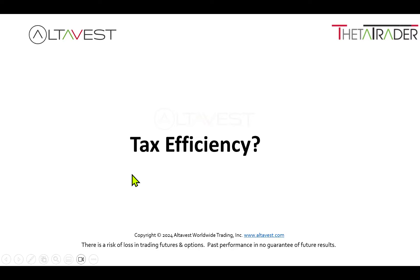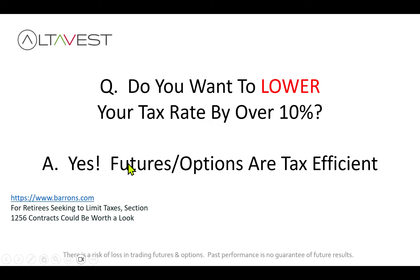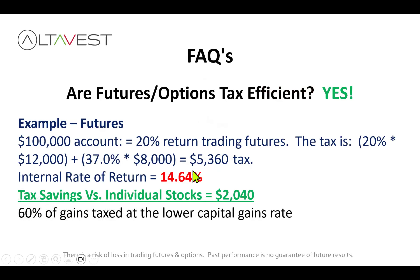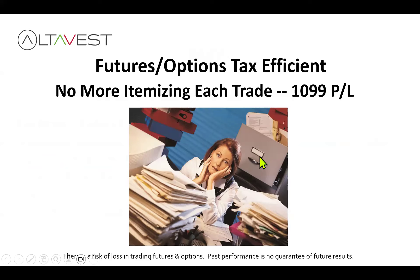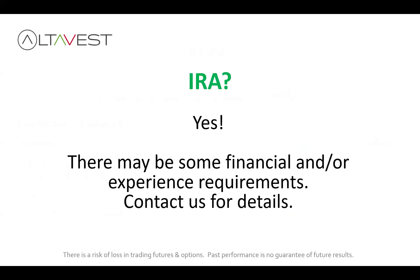Did you know that you can lower your tax rate with futures options trades? They're treated as 1256 contracts according to the IRS. With a $100,000 account earning a 20% return trading options with futures, 60% of those gains are taxed at the lower capital gains tax rate, saving you over $2,000 compared to individual stocks. So it's tax efficient — no more itemizing trades, you just get a 1099 with your P&L. Always consult your tax attorney. And yes, IRAs are available — people transfer those to us every week.